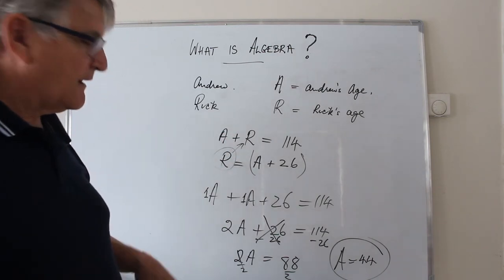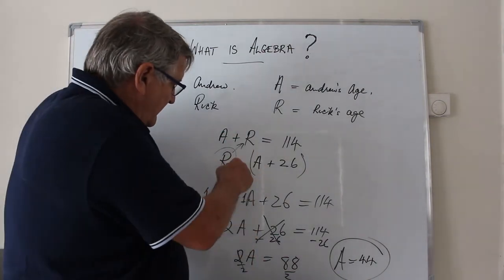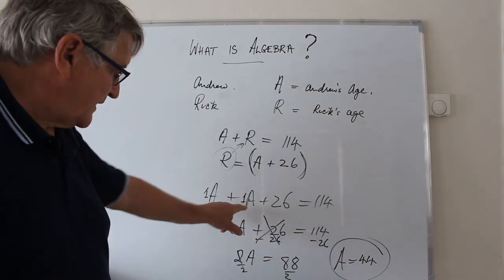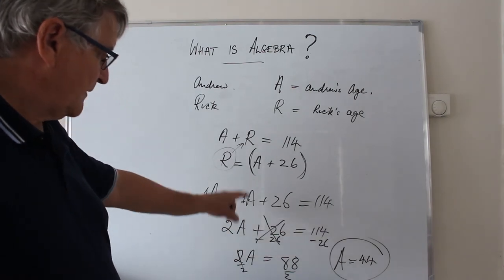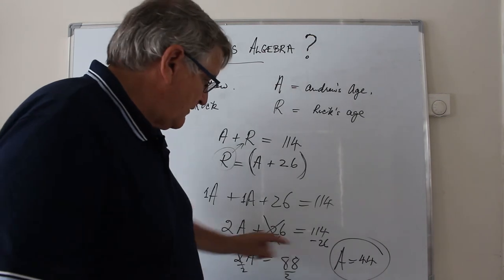And then we've done a sneaky little trick called substitution. Instead of R, we've replaced it with this quantity, A plus 26. A plus A is the same as 2A, plus 26 is 114. So 2A must have been 88. So A must have been 44.